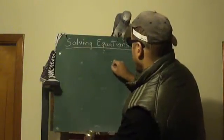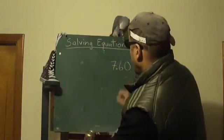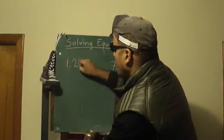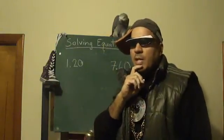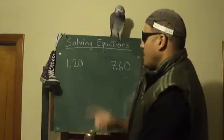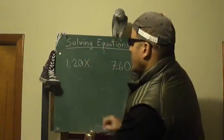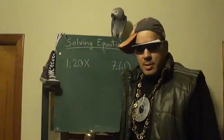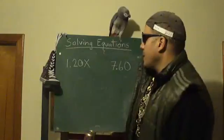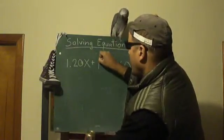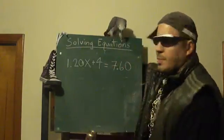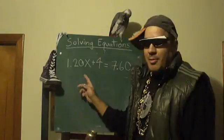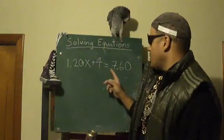Let's say we have $7.60 to spend, and the sodas are $1.20 each. How many sodas are we going to buy? We don't know yet — that's going to be our unknown, our x. So $1.20 times x tells us how much we're spending on sodas. We express that as 1.20x. Plus, let's say the hot dog is $4, so we say plus 4. And we want it to equal $7.60. We made our own equation based on a real-life situation.